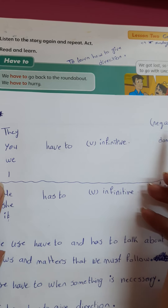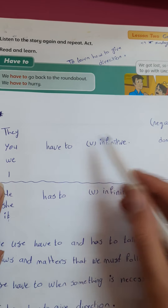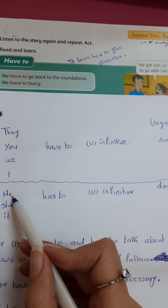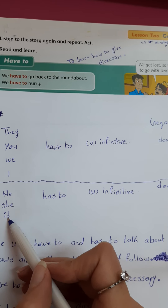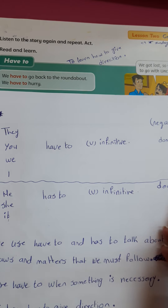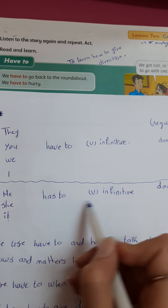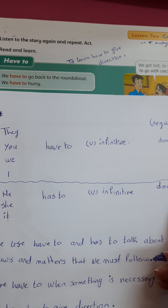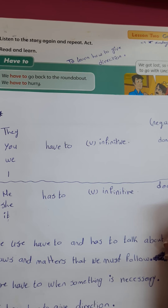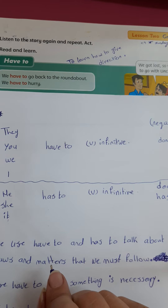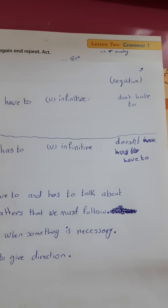For the plural, the negative form is 'don't have to'. هاي للجماعة. For the singular — he, she, it — we use 'has to', and the negative form is 'doesn't have to'. Here the negative form: 'don't have to' للجماعة, 'doesn't have to' للمفرد.